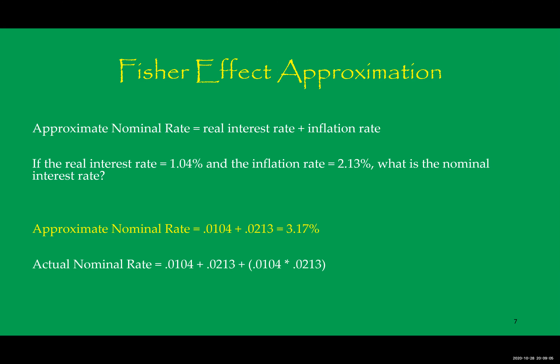If we go back and use the Fisher Effect to determine the actual nominal rate, notice that it's slightly higher — 3.19%. So the approximation will be close, but not as precise as determining the actual nominal rate.